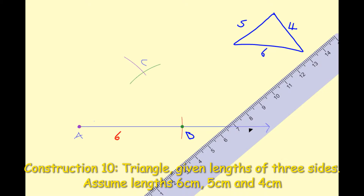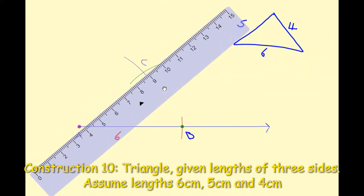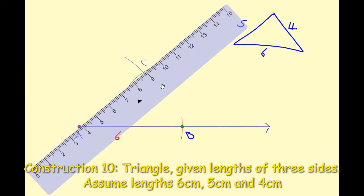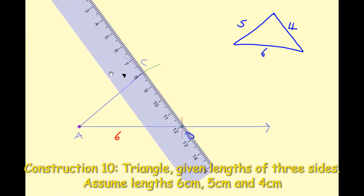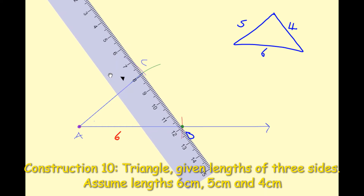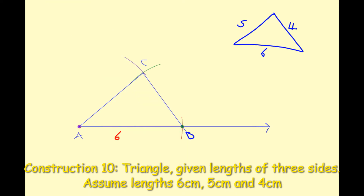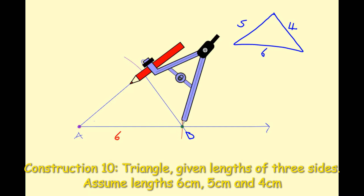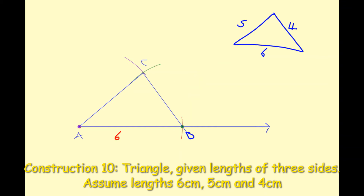I'll write in point C where the arcs intersect. With my ruler I'll line up point A with point C and draw the line segment AC, then rotate the ruler to connect point B to point C. Removing the ruler you can now see triangle ABC. I'll mark in the five centimetres and four centimetres on the respective sides. That is the triangle with three sides measuring six, five and four centimetres — that is construction 10.